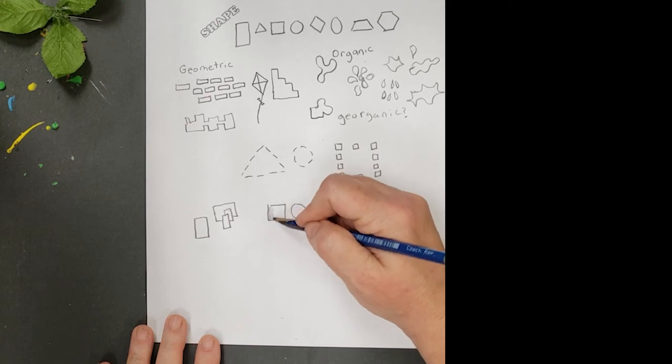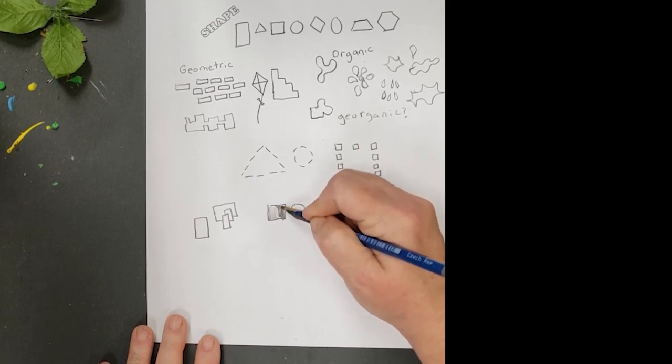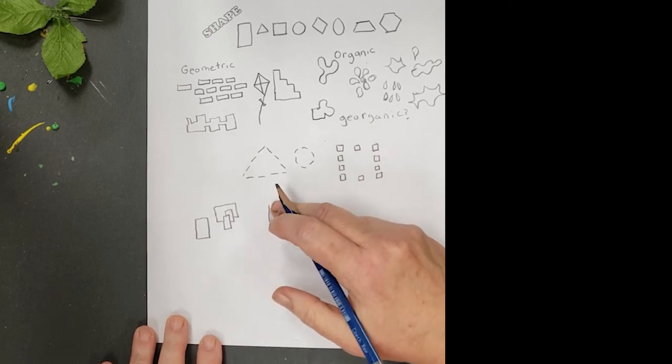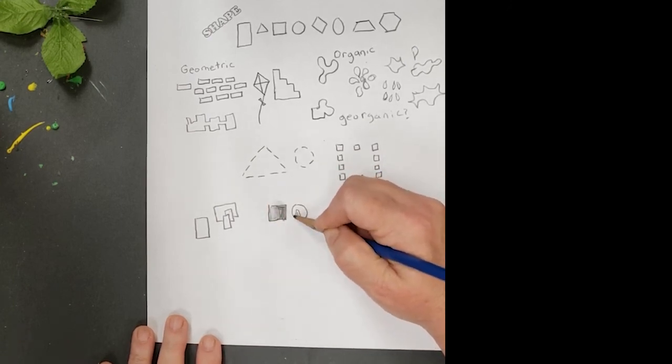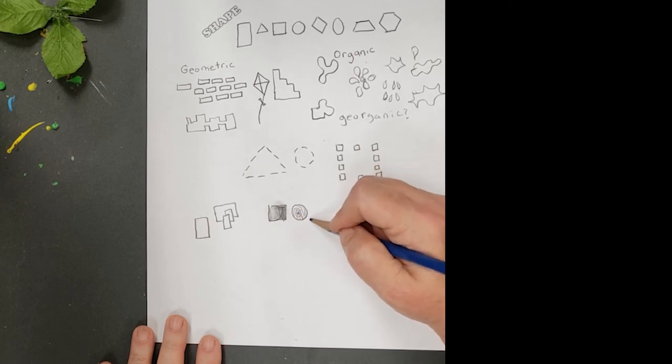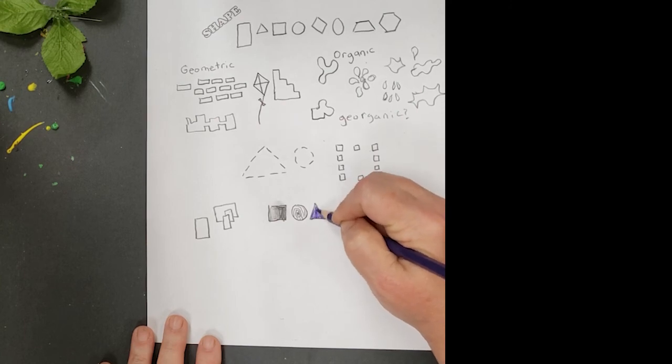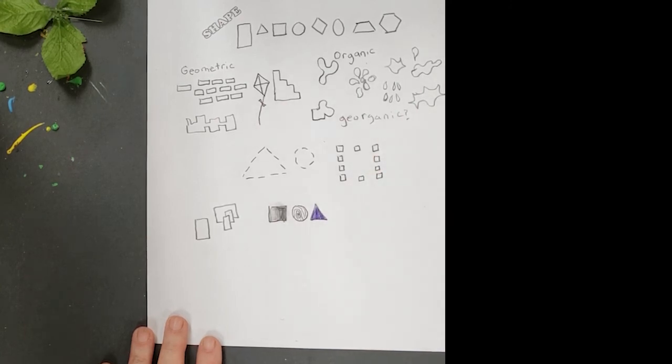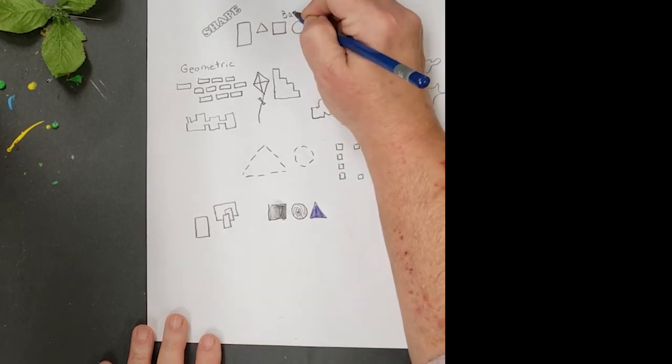I'm going to, like value, you could make the shape different values, which is how light or how dark it is. You could create a texture inside of a shape, like if you were doing a tree, you could create the texture in it, or you could even use color inside of your shape. So those are other elements of art that you could use along with shape.